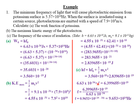Dividing both sides by h = 6.63 × 10⁻³⁴: f = (6.399655 × 10⁻¹⁹) / (6.63 × 10⁻³⁴). Dividing coefficients: 6.399655 / 6.63 = 0.9653. For the powers: 10⁻¹⁹ ÷ 10⁻³⁴ = 10⁻¹⁹⁺³⁴ = 10¹⁵. So f = 9.653 × 10¹⁴ Hz. You can clearly see that the frequency of incident radiation is greater than the threshold frequency, which is why photoelectric emission took place.